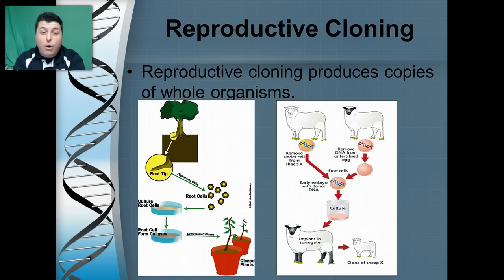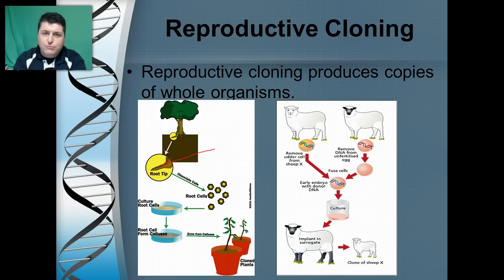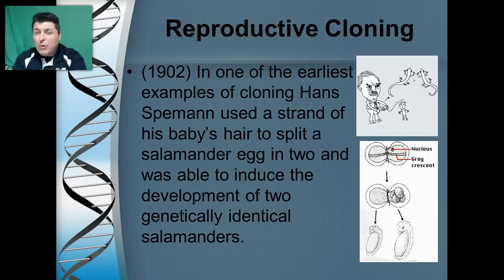Reproductive cloning is a little different in that we're producing copies of a whole organism. Reproductive cloning in plants has been done for a long time, mostly because plant tissues often retain their ability to become whole organisms — they contain a lot of totipotent tissues. The tips of roots and many stems can be used to propagate new cloned plants, whereas cloning animals is a little more difficult.